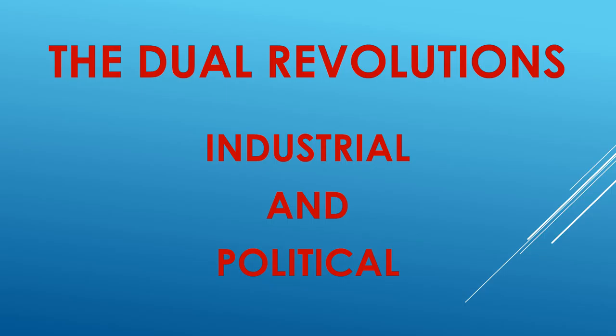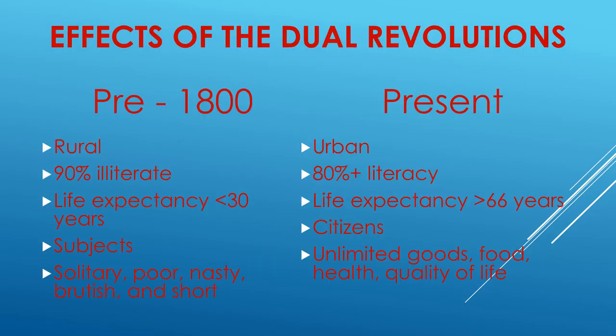It's important to note that both these revolutions — the political and the industrial — are still playing out and still changing our lives. So, what have been some of the results produced by these processes? Let us take a simple before and after approach. Before 1750, and for many years after, over 80% of Europe's population lived rurally. Today, fewer than 30% do. And in the United States, it's less than 20%.